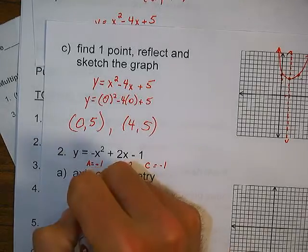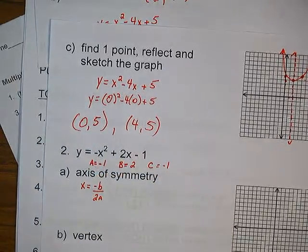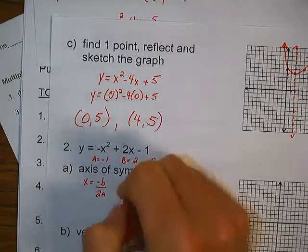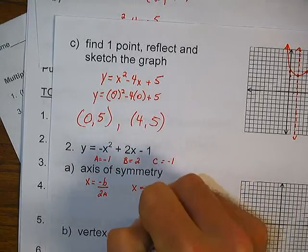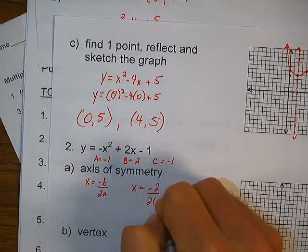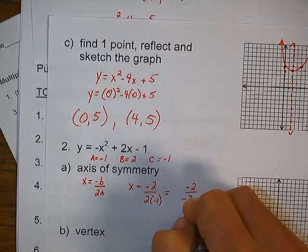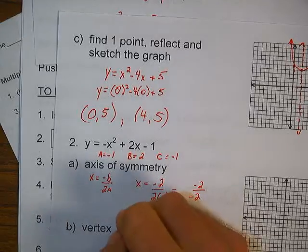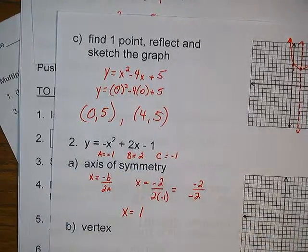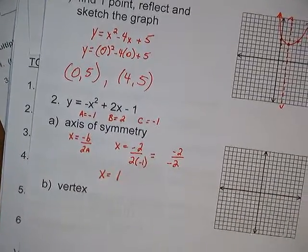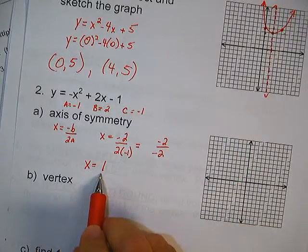Now I use the formula: x equals opposite of b over 2a. So x equals the opposite of 2, which is negative 2, over 2 times negative 1. We have negative 2 over negative 2 — negative divided by negative is a positive. So my equation for my axis of symmetry is x equals 1. It's a vertical line that crosses the x-axis at 1.